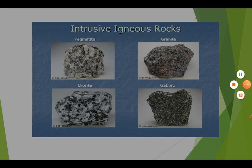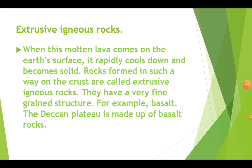I am going to tell you about extrusive igneous rocks. As I told you, when molten lava comes on the earth's surface and it rapidly cools down and becomes solid, it forms extrusive igneous rocks. To make it very short: whatever process takes place inside the earth forms intrusive igneous rock, and whatever process takes place on the surface of the earth is called an extrusive process and forms extrusive igneous rocks.